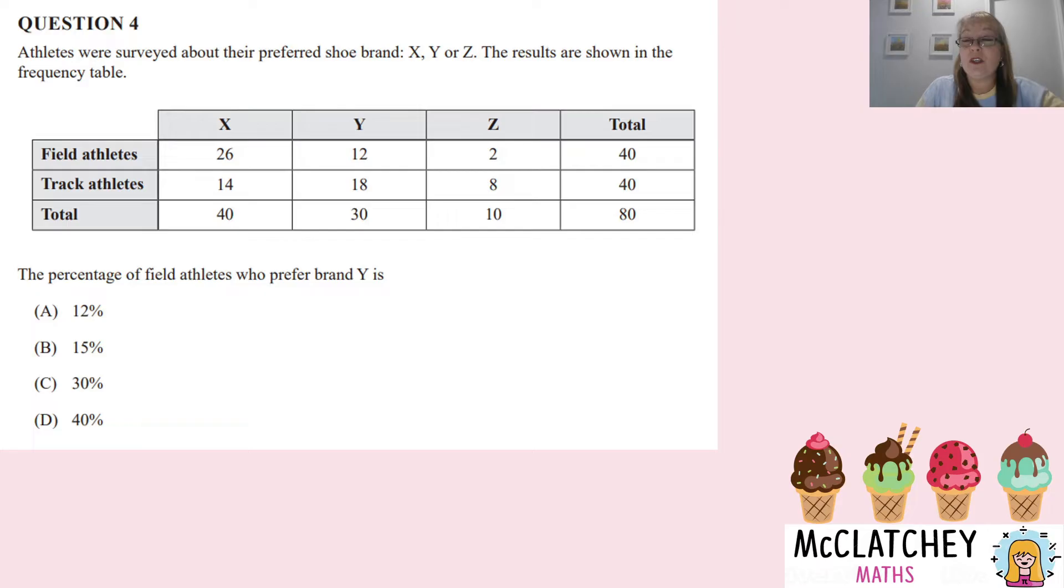So firstly, it was question four and it says, athletes were surveyed about their preferred shoe brand, X, Y or Z, and the results are shown in the frequency table. So we've got two types of athletes, field athletes and track athletes, with a total of 80 people surveyed altogether.